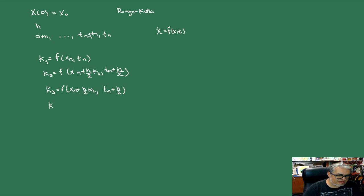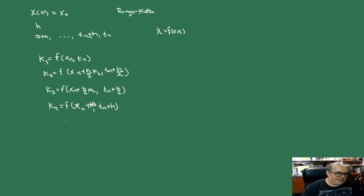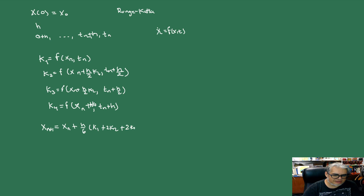Y finalmente K4, que va a ser la F en TN más H, pero la XN va a ser XN más H por K3, ya en el paso completo. Entonces el N+1-ésimo punto de nuestra solución aproximada por este método va a ser la anterior más H/6 — que es H sobre 3 factorial — por K1 más 2K2 más 2K3 más K4. Y con esto en principio aproximaríamos la solución.